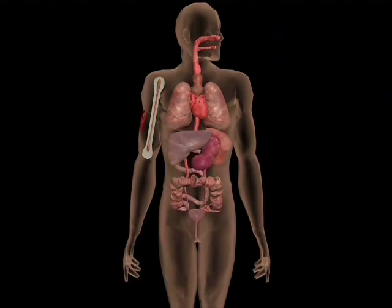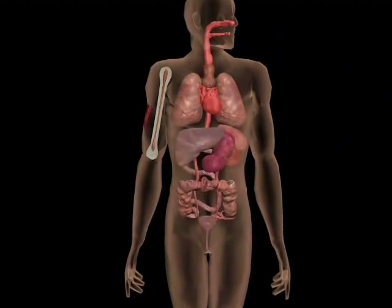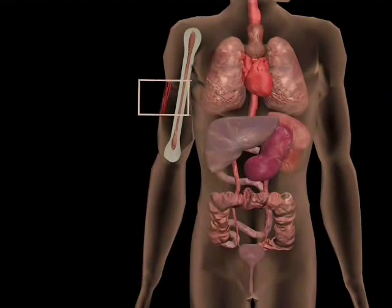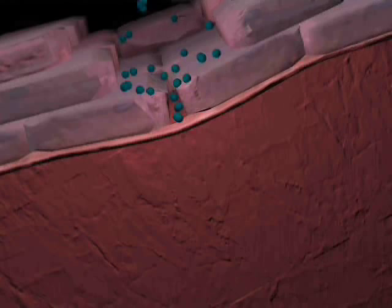Another possible route of entry for bacteria is through broken skin. For example, C. tetani, the causative agent of tetanus. A bacterial colony could become established following a wound.